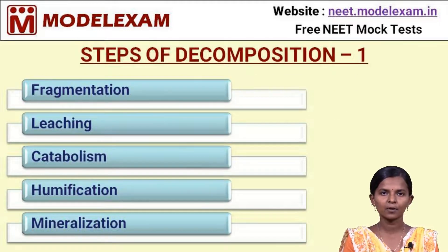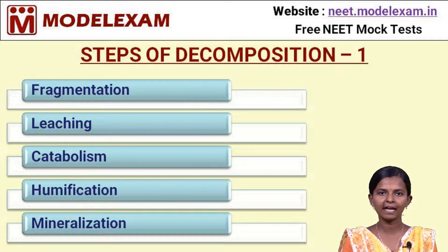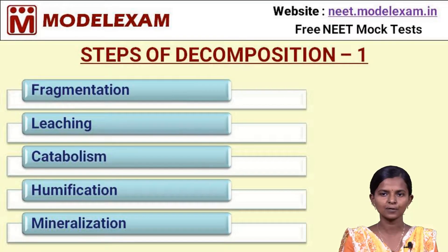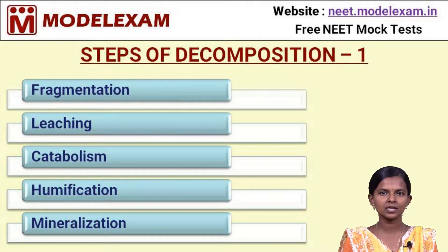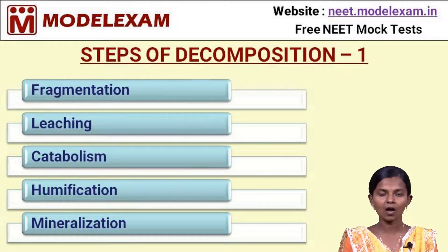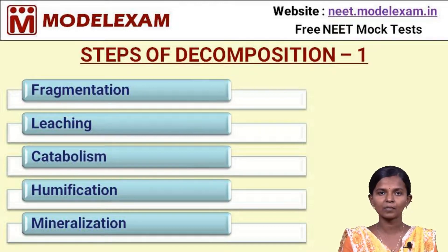There are five important steps involved in the decomposition process. The first is fragmentation, the second is leaching, then catabolism, humification, and finally mineralisation. These steps convert organic matter into inorganic substances.